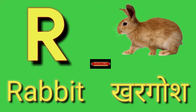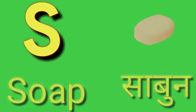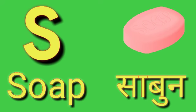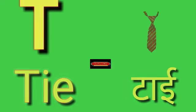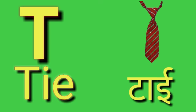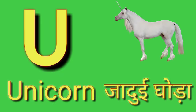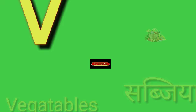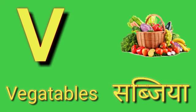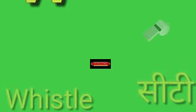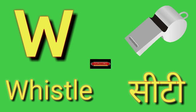R for Rabbit, Rabbit means Kargosh. S for Soap, Soap means Sabun. T for Tie, Tie means Tie. U for Unicorn, Unicorn means Jadui Goda. V for Vegetables, Vegetable means Sabajiyan.